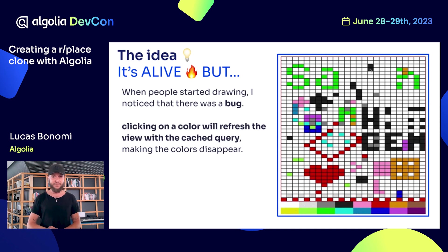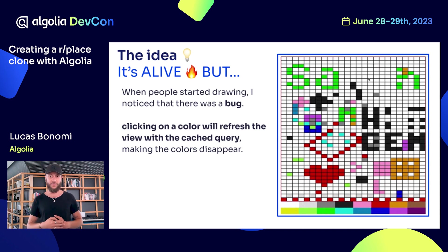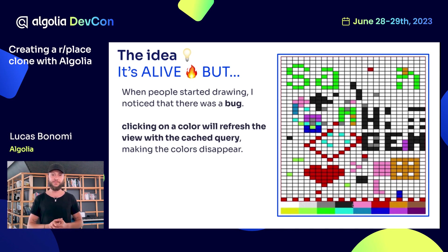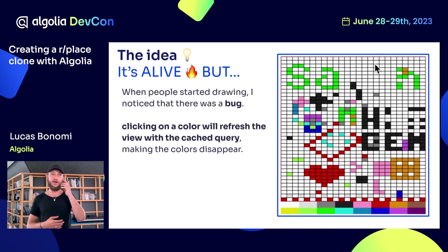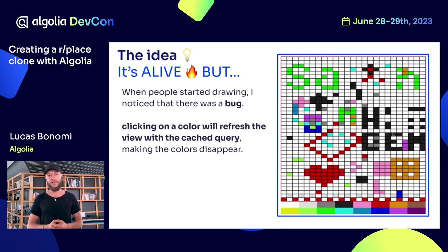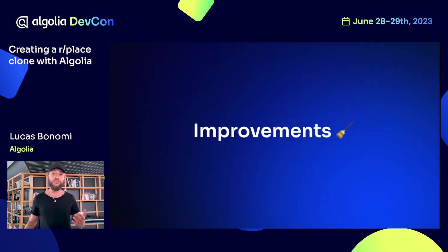But as you can see in this GIF, I noticed some issues. Here I'm drawing a cross, but as soon as I go to reach for another color, the cross will disappear. That's because by default Algolia will cache the API response into your client — because in a normal situation, your index doesn't change that much. But I needed to get rid of this feature, so I started working on improvements.